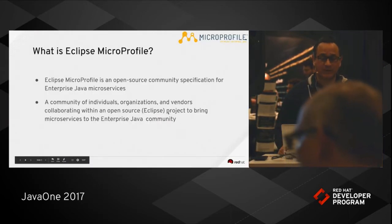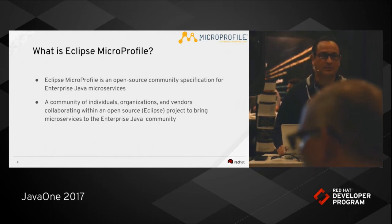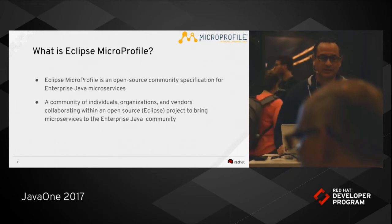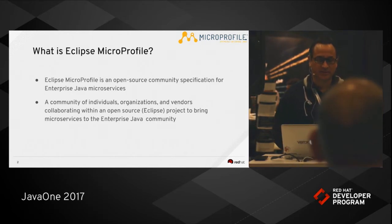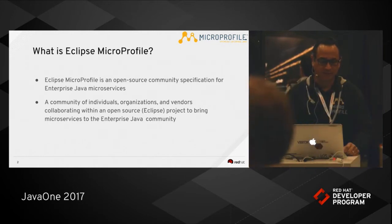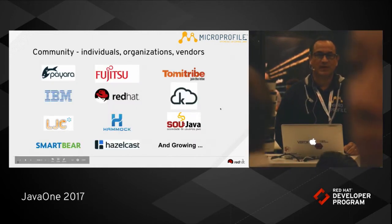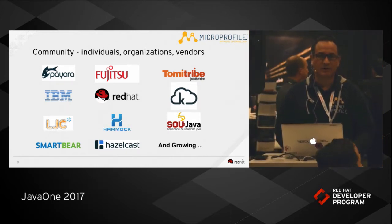So what is Eclipse MicroProfile? It is an open source community specification for enterprise Java microservices. It's really a community of individuals, organizations, and vendors collaborating within an open source foundation — in this case the Eclipse Foundation — to bring microservices to the enterprise Java community. This slide shows a few of the individuals, organizations, and vendors that are part of the MicroProfile community.